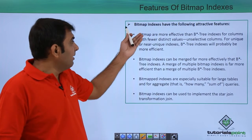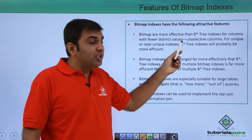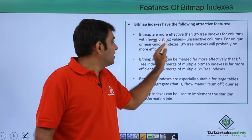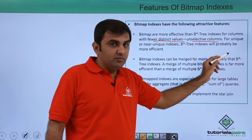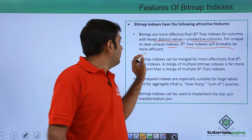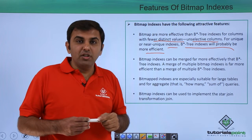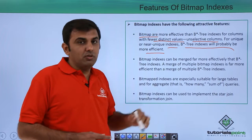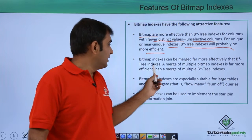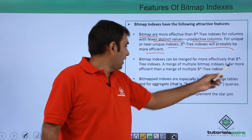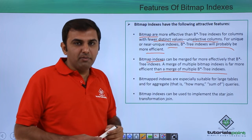Bitmap indexes have the following attractive features. Bitmaps are more efficient than B-tree indexes for columns with fewer distinct values — that is, unselective columns. For unique or near-unique columns, B-tree indexes are probably more efficient. Bitmap indexes can be merged more effectively than B-tree indexes — a merge of multiple bitmap indexes is far more efficient than the merge of multiple B-tree indexes.